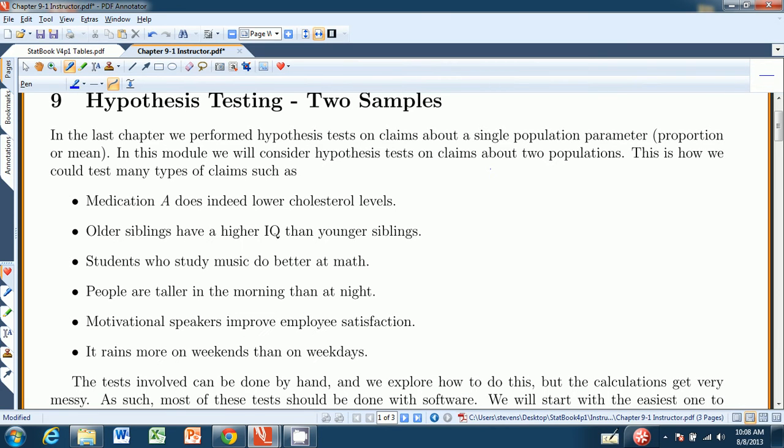...determine whether or not medication A does indeed lower cholesterol levels, or test a claim that older siblings have a higher IQ than younger siblings. You'd have the older sibling, you'd get the mean from a bunch of older siblings, mean from a bunch of younger siblings, and you have two samples, and you compare that mean.